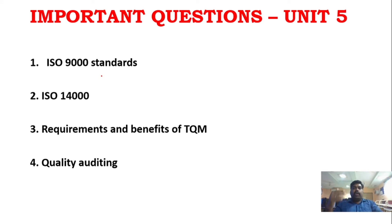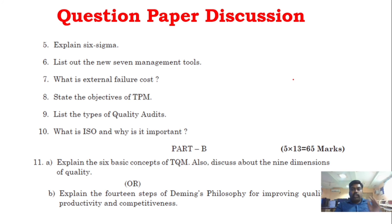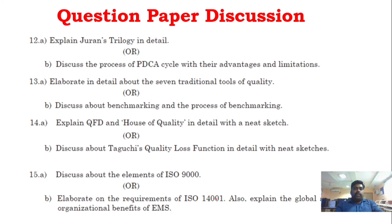Now we will see the question paper discussion. Looking at November/December 2020: for 2-mark questions, 8 to 9 marks are easy to score if you study the previous question paper. For 13-mark questions, Deming's philosophy appears by default — 90% of question papers. The 12th question is Juran's Trilogy, and the PDCA cycle is also a very expected question.